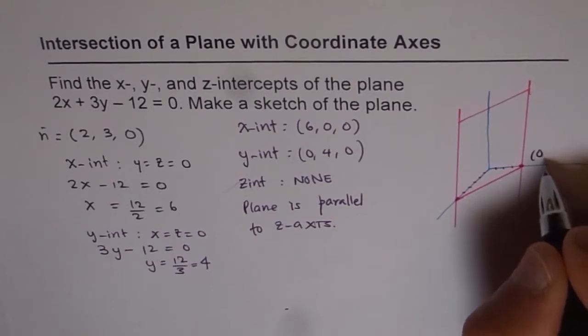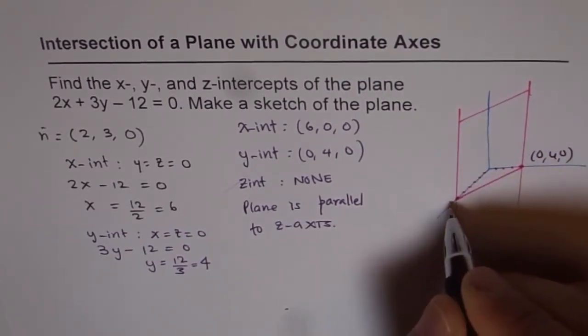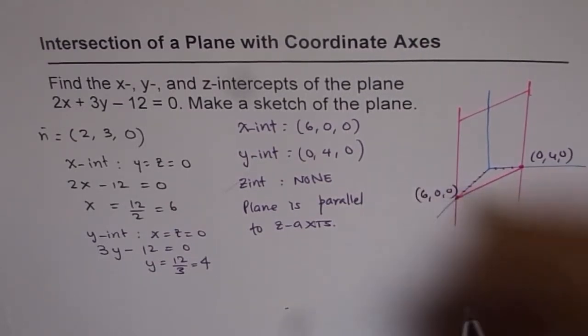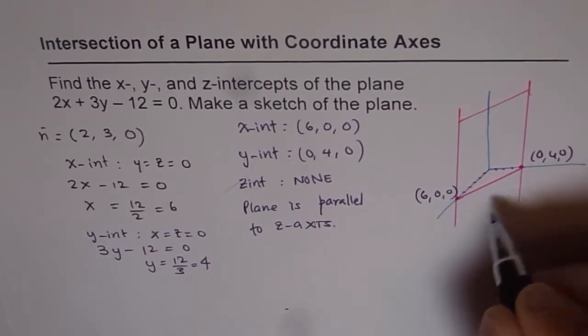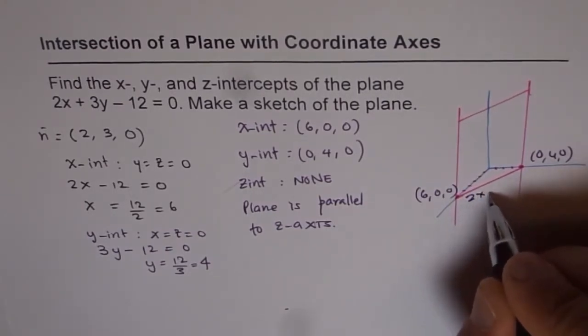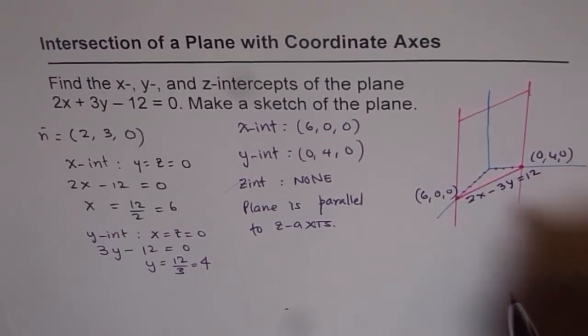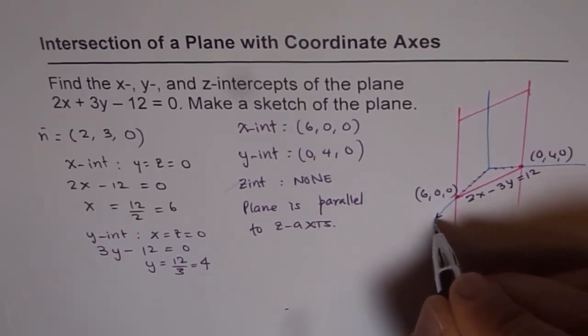So that is how we can sketch a plane in this condition. We have this point as (0, 4, 0) as the y-intercept and the x-intercept is (6, 0, 0). And you'll notice that this equation of the line which is contained in the plane is 2x plus 3y equals 12. That is the equation of the line which is actually the intersection of the plane with the x-y plane.